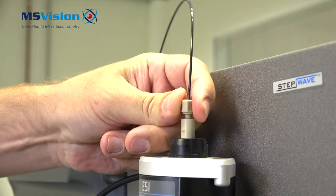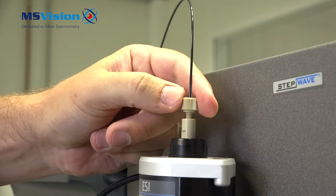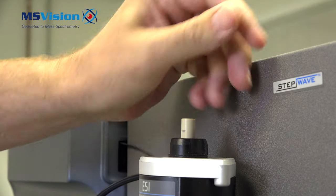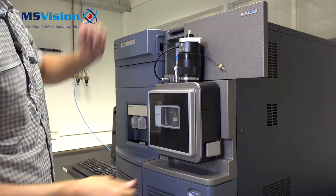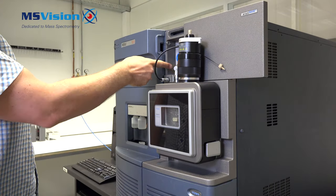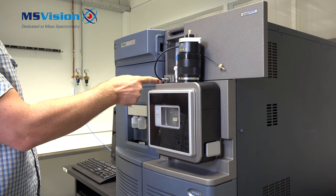First, disconnect the inlet connection which is on top of the probe. Then slide open the door. Behind here there's a large fissure connector and a small fissure connector for the capillary voltage.